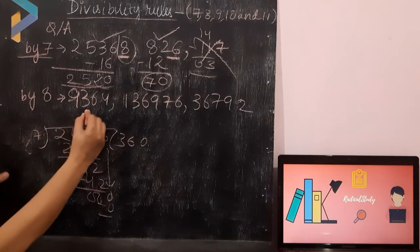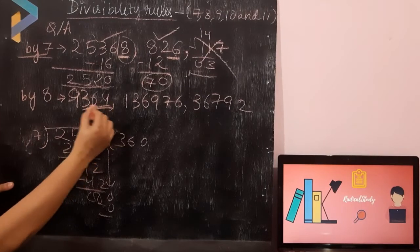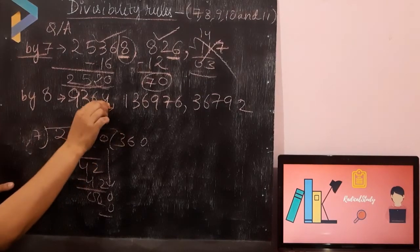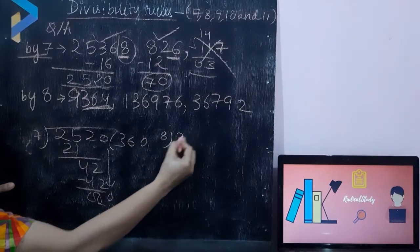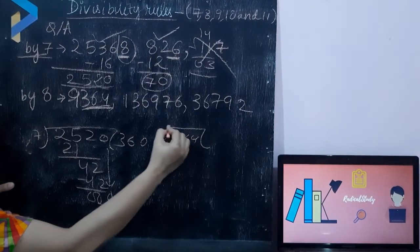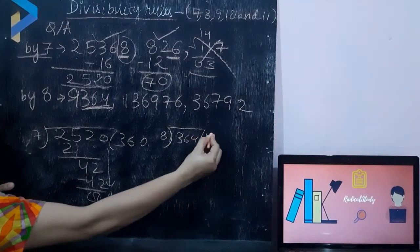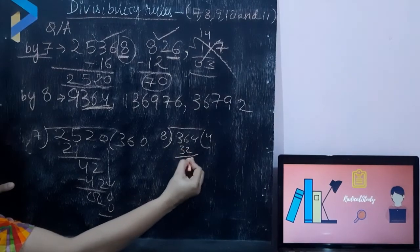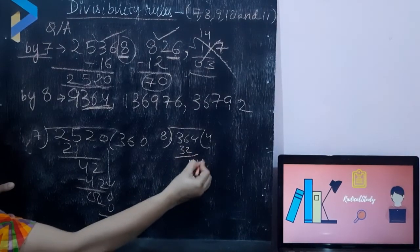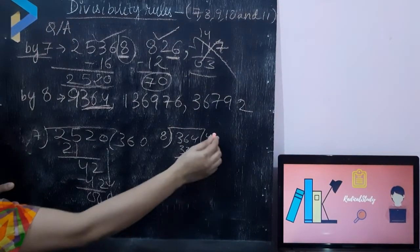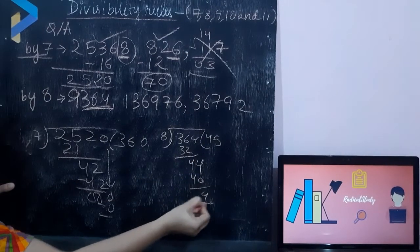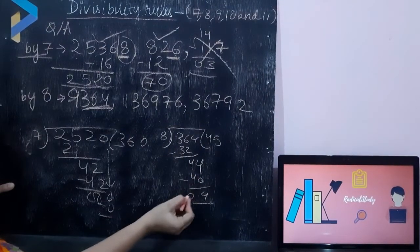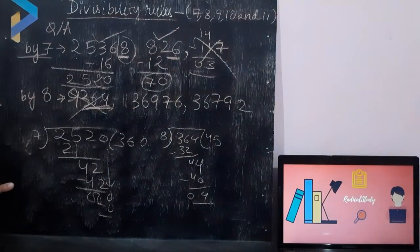As per the rule of 8, we check the last 3 digits for divisibility by 8. I am going to divide 364 by 8. 8 fours are 32 — we get a remainder of 44. So it is not divisible by 8 because the remainder is not 0. Therefore this number is not divisible by 8.